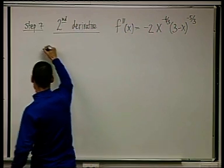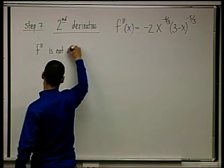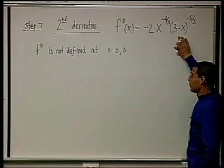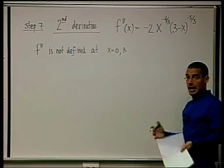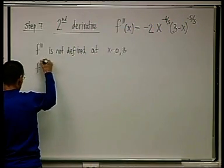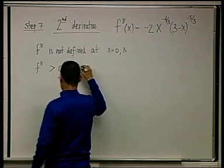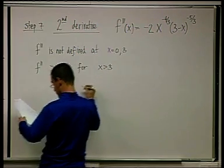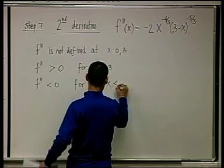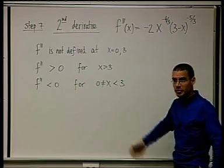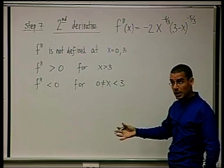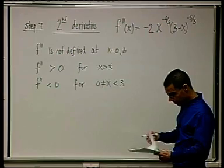f double prime is not defined at x equals zero and x equals three — that's obvious because f prime wasn't even defined there, so you can't take its derivative. You can observe that f double prime is positive for x greater than three, and f double prime is negative for x nonzero and less than three. It's the same sort of calculations and inequalities as in step four, but now for the second derivative.